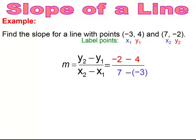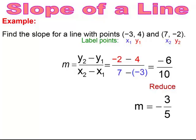When you have a negative value plugged in, you might get a double negative, and that double negative turns to a positive. Here, x2 is 7 minus x1 which is negative 3 — that creates a double negative. My y2 is negative 2 and y1 is 4. After arithmetic, the double negative changes to a plus, giving negative 6 over positive 10. Always reduce the fraction — the slope here is negative 3 over 5.